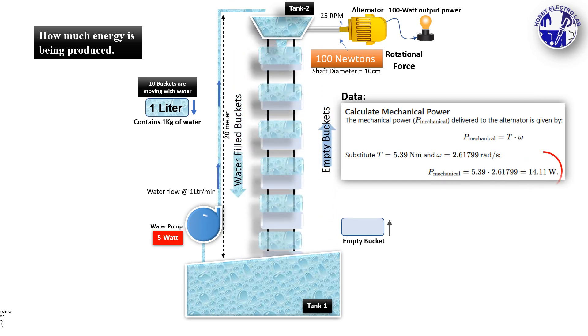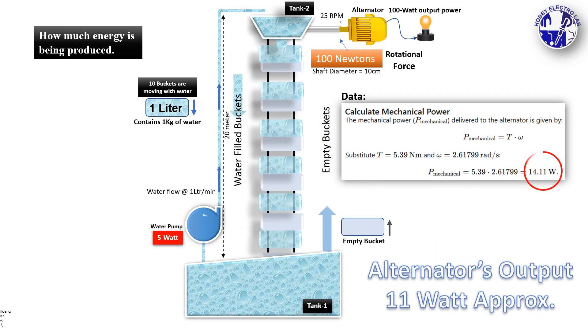The water-filled buckets exert a total downward force of 98.1 newtons on the shaft. After doing some calculations, we found that the shaft is theoretically producing about 14 watts of mechanical power. If the alternator has an efficiency of 80%, the electrical power produced is approximately 11.29 watts.